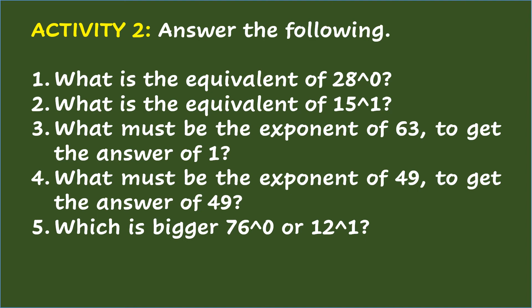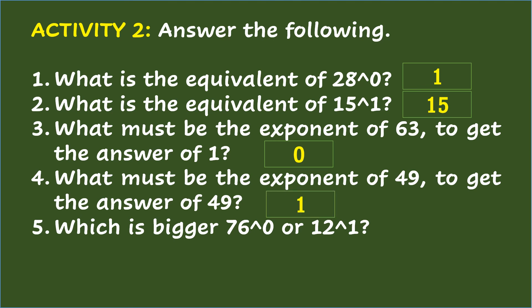Activity 2: answer the following. Number 1: what is the equivalent of 28 to the power of 0? The answer is 1. Number 2: what is the equivalent of 15 to the power of 1? The answer is 15. Number 3: what must be the exponent of 63 to get the answer of 1? The answer is 0. Number 4: what must be the exponent of 49 to get the answer of 49? The answer is 1.